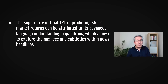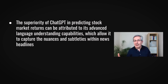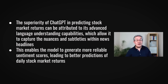The authors conclude that the superiority of ChatGPT in predicting stock market returns can be attributed to its advanced language understanding capabilities, which allow it to capture the nuances and subtleties within news headlines. I think the more interesting point is that it actually interprets things in the same way as market participants — because that's the goal: to predict what the stock market does, you have to get into the mind of investors. It is truly remarkable that the model can do that, particularly as it's not specifically trained to do so. Their conclusion is that this enables the model to generate more reliable sentiment scores, leading to better predictions of daily stock market returns.